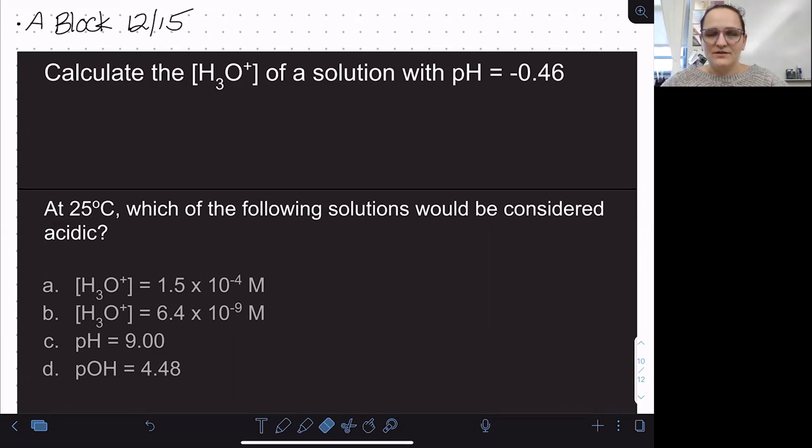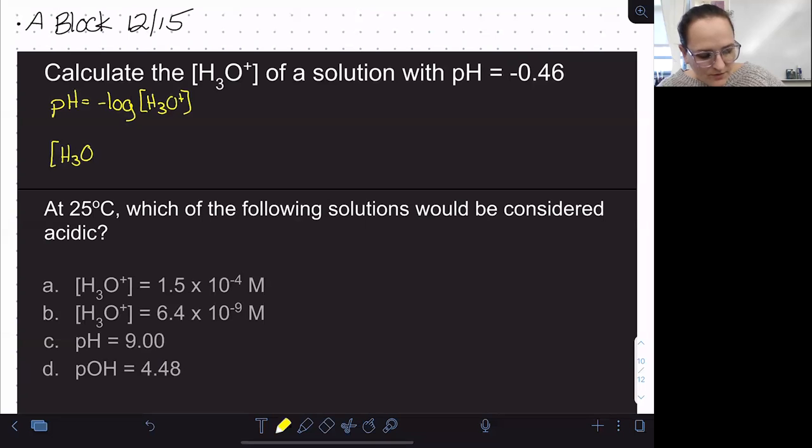So the first question in the first lesson here, lesson number five, asks you to calculate the hydronium concentration for a solution where the pH is negative 0.46. So the pH of a solution is just equal to the negative log of the hydronium concentration. If we solve this for the hydronium concentration, the inverse function of a logarithm is an exponential. So we get that the hydronium concentration is equal to 10 to the negative pH.